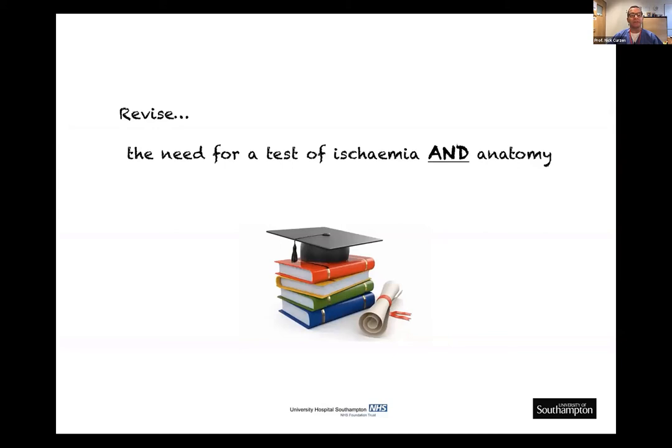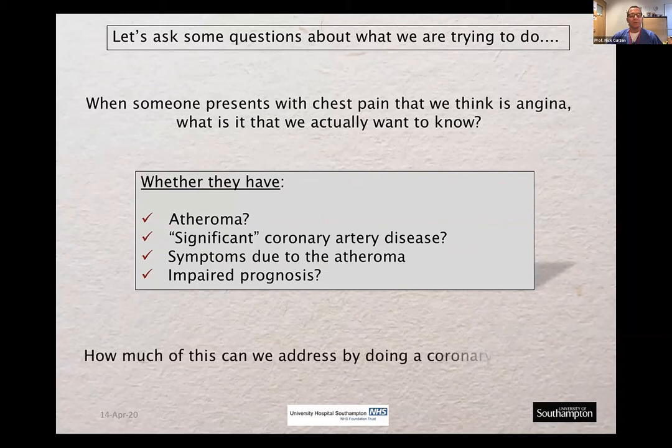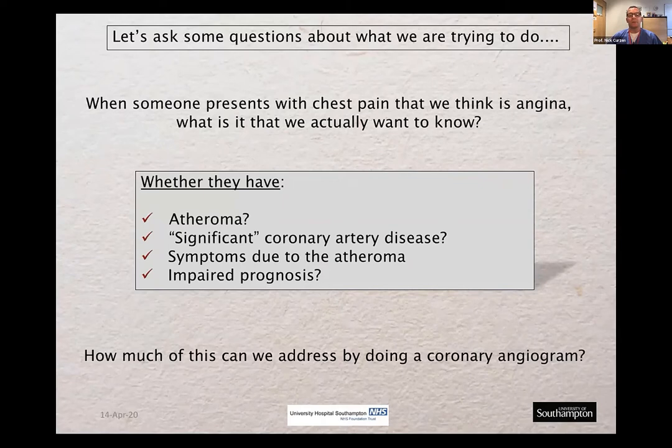The first step is to ask why there's a need for a test covering both ischemia and anatomy if we're going to treat people with chest pain accurately. When someone presents with chest pain that may be angina, we want to know: do they have atheroma, because if so they'll benefit prognostically from medical therapy? Do they have significant coronary disease? We also need to know whether their symptoms are due to the atheroma we see, and whether the atheroma — plus or minus ischemia — will affect their prognosis.